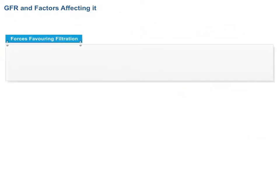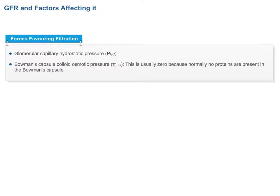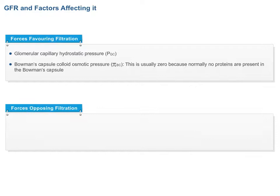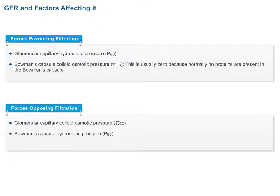Therefore, the forces favoring filtration are: glomerular capillary hydrostatic pressure (PGC), and Bowman's capsule colloid osmotic pressure (PI-BC), which is usually zero because normally no proteins are present in the Bowman's capsule. The forces opposing filtration are: glomerular capillary colloid osmotic pressure (PI-GC), and Bowman's capsule hydrostatic pressure (PBC).